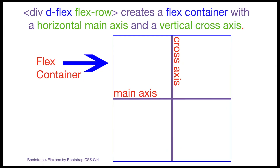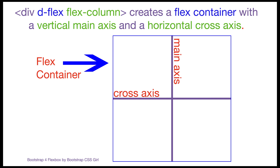Now let's take a look at some visual illustrations. In this first illustration, the square is a Flex container. Since I have given my Flex container a Flex Direction of Flex-Row, we have a horizontal main axis and a vertical cross axis — these are used for alignment of the Flex items. In this second illustration, my Flex container has a Flex Direction of Flex-Column, so we have a vertical main axis and a horizontal cross axis.